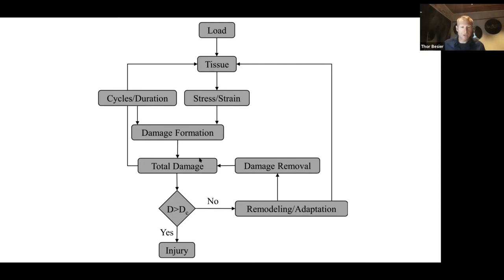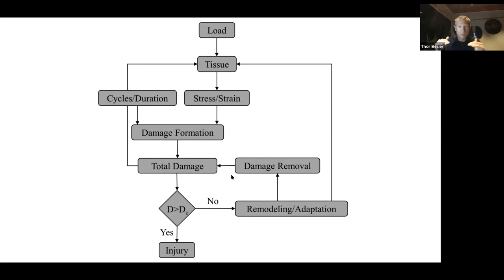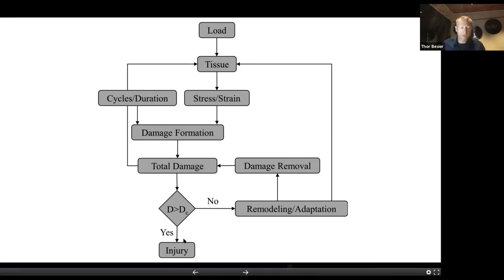After changing the structure in response to that damage, the question is whether we're now below the critical threshold. This process continues until you're in equilibrium — what Frost would call the mechanostat lazy zone. You've reached equilibrium, the damage is no longer causing micro damage to the tissue. If the damage goes above the critical threshold, that's when we get injured.